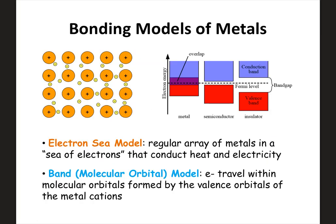A bit more about metals: we already know the electron sea model, where there's a sea of free-floating valence electrons that can move between all the different metal cations. There's another model called the band model, but that's more for reference and not something you need to know for the AP exam. What's important is understanding that metals have these free-floating valence electrons, and that's what leads to the properties of metals.